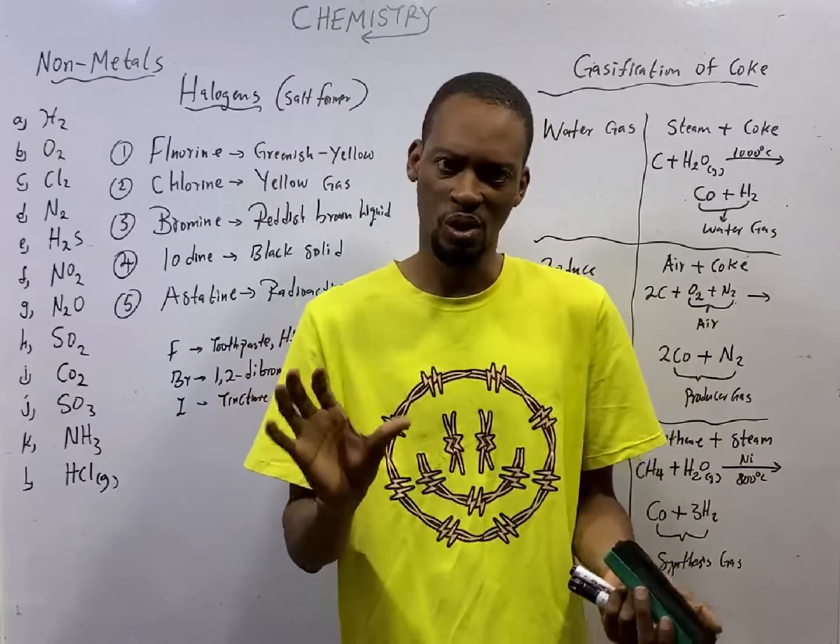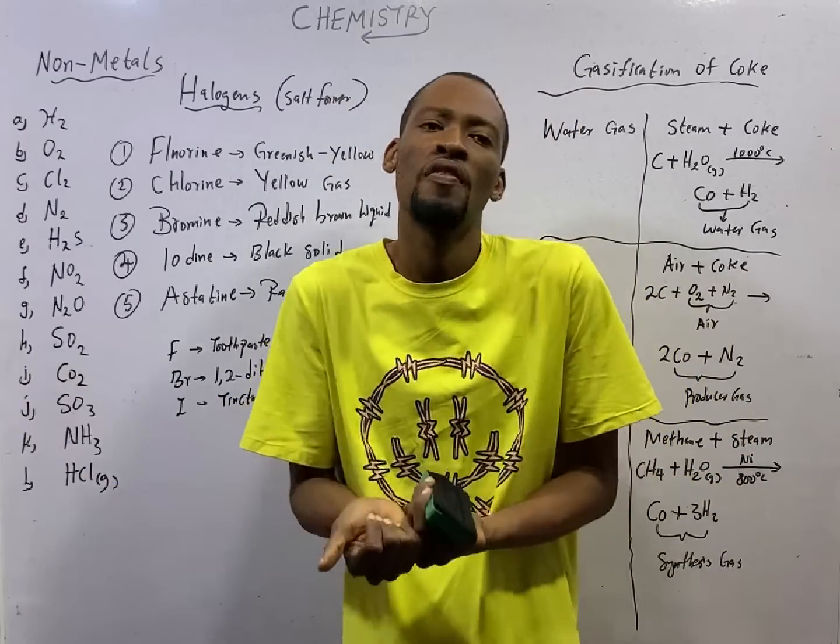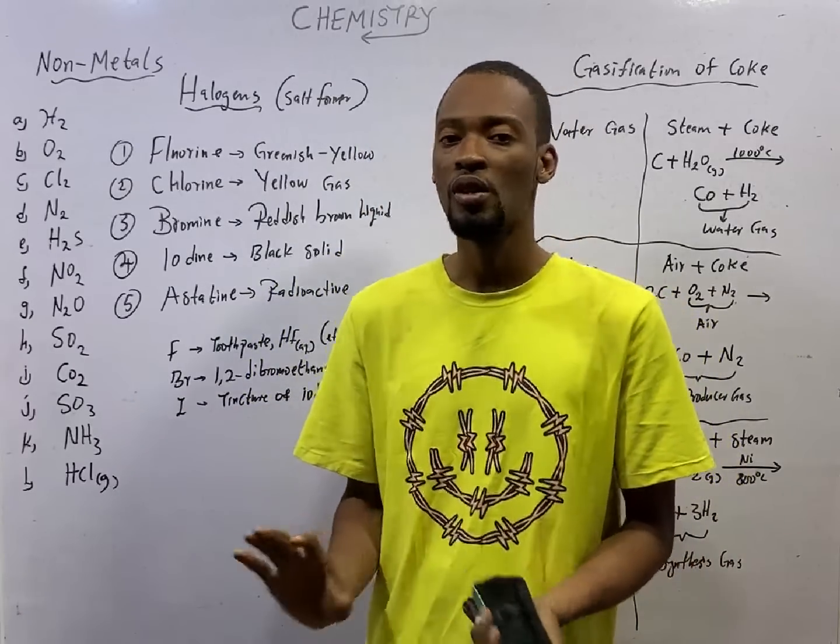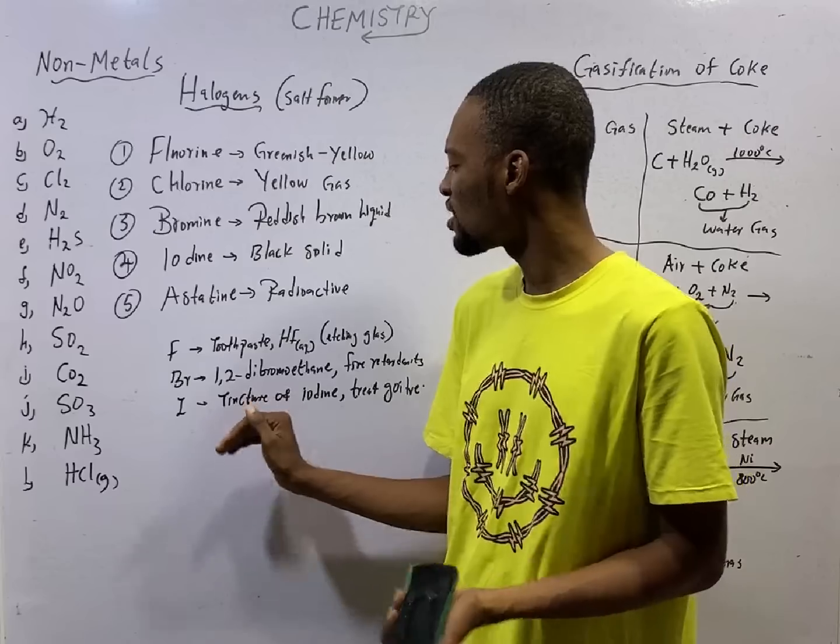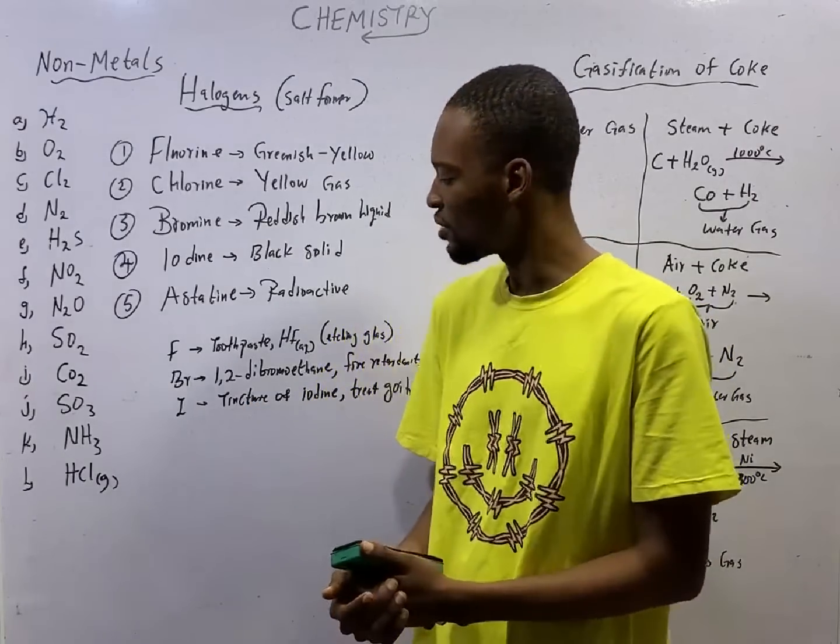Tetraethyl lead was formerly used as a petroleum additive. However, we found it to be poisonous and causes pollution, so we stopped it, and we started using 1,2-dibromoethane to increase the quality of petrol.